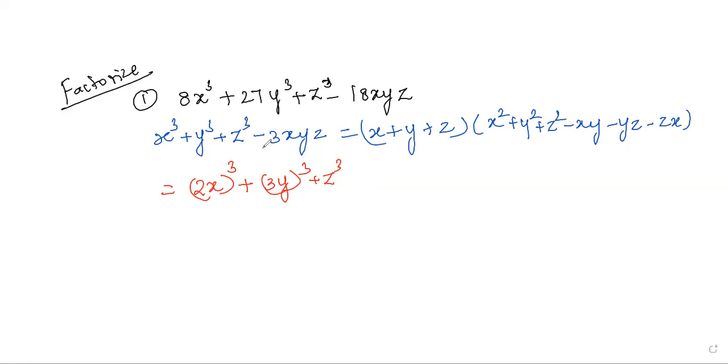Now we have to check the minus 3xyz formula. Minus 3 into x is 2x, y is 3y, z is z.